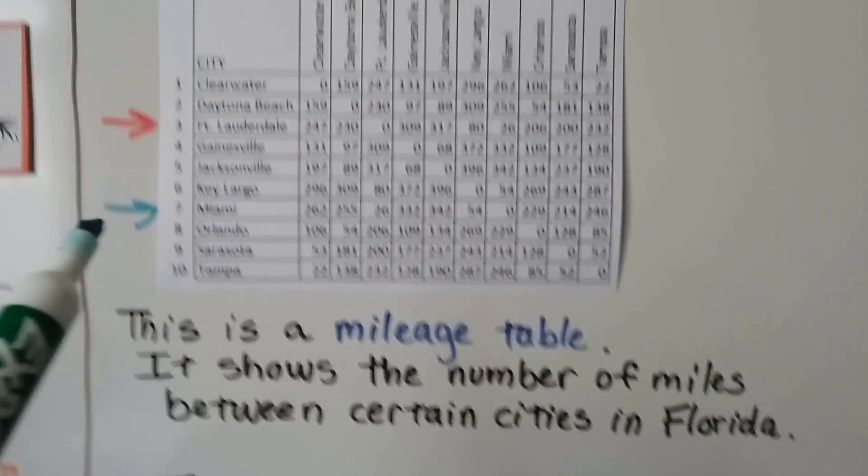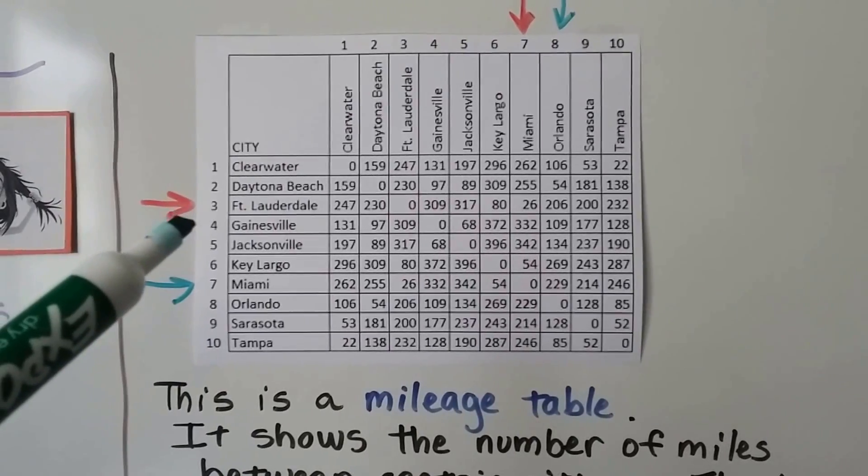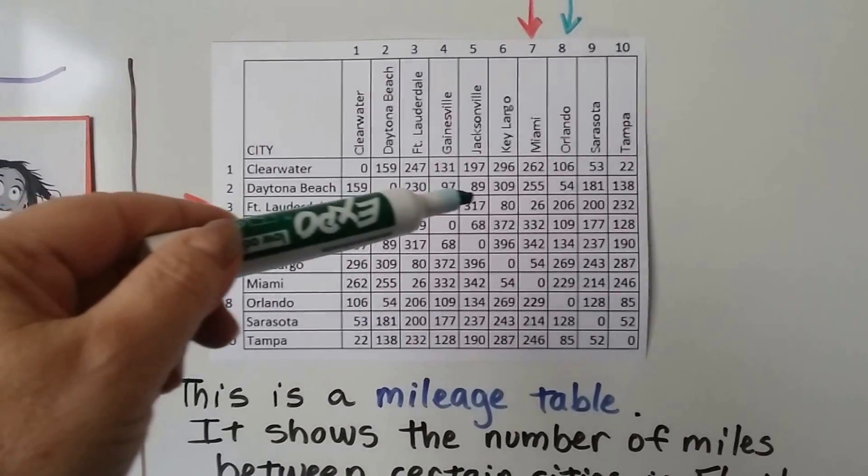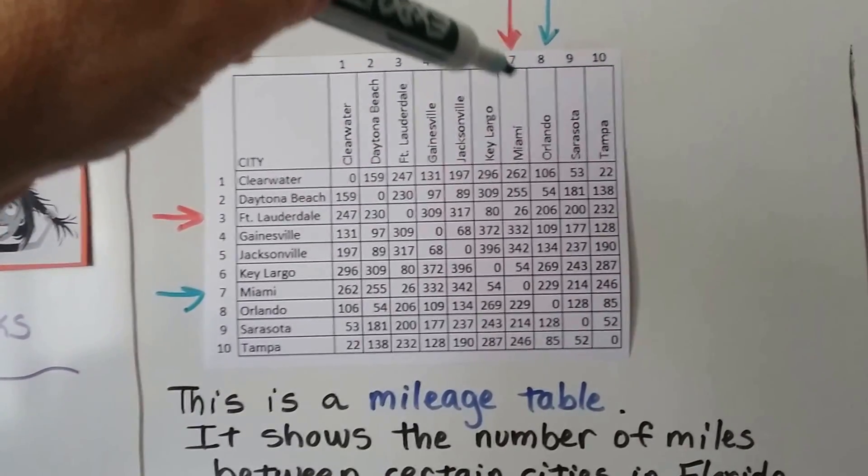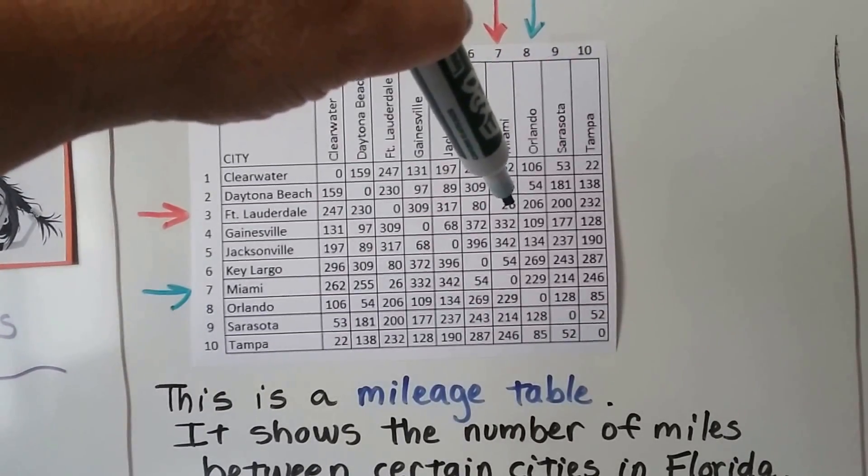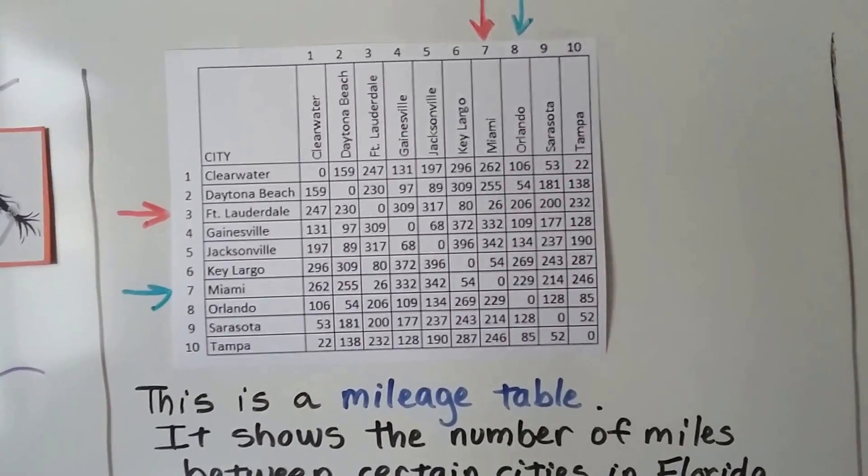So we look at this table. She needs to go from Fort Lauderdale to Miami. So here's Fort Lauderdale. We go across until we see Miami. That's the other red arrow. And Fort Lauderdale and Miami meet at the 26. So we know they're 26 miles apart.